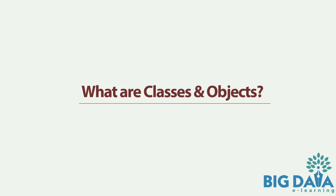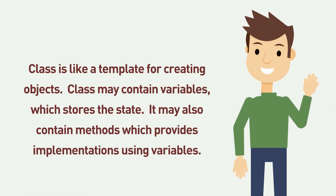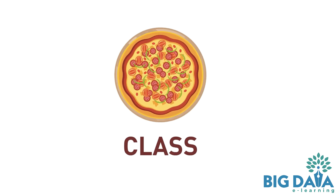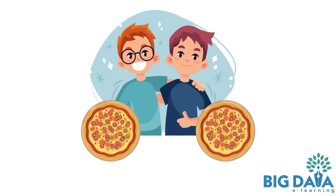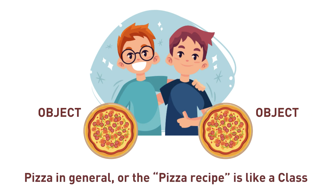What are classes and objects? A class is like a template for creating objects. A class may contain variables which store the state. It may also contain methods which provide implementations using variables. For example, when making a pizza, you can think of pizza as the class. Say you and your best friend John are going to order pizza. Your pizza and John's pizza are objects. The pizza recipe is like a class — it is a template that we can use to create objects.